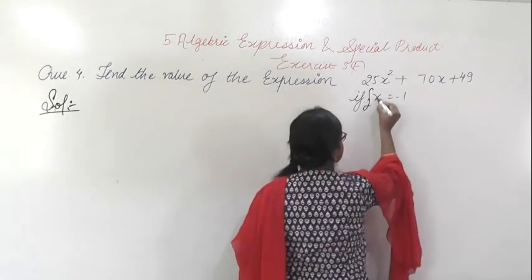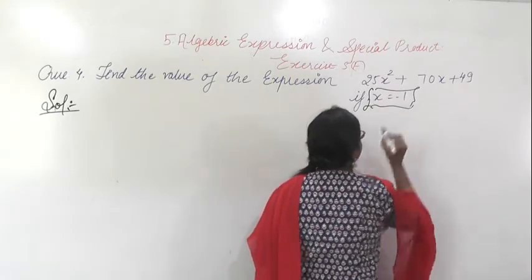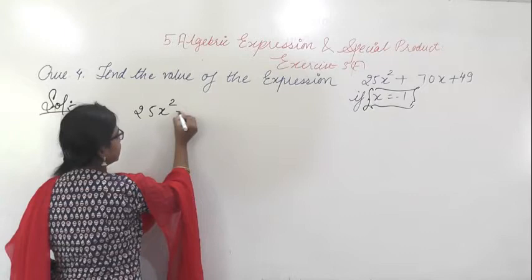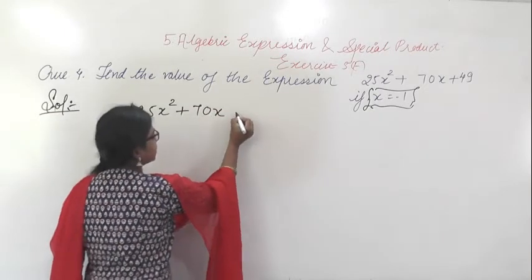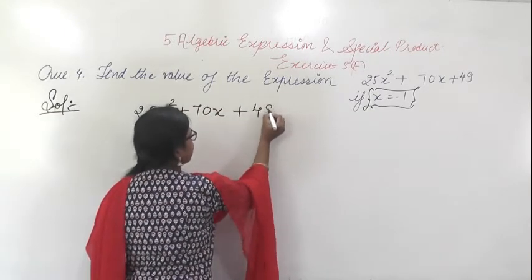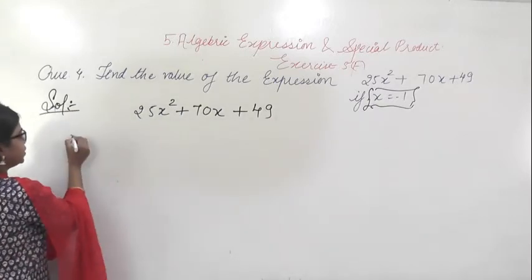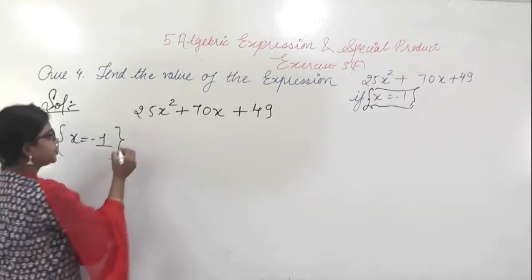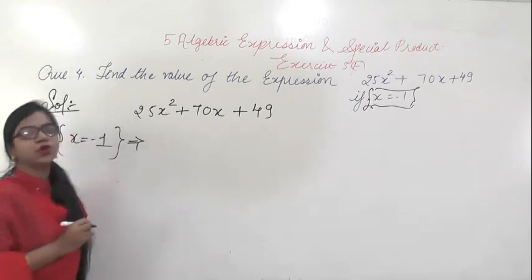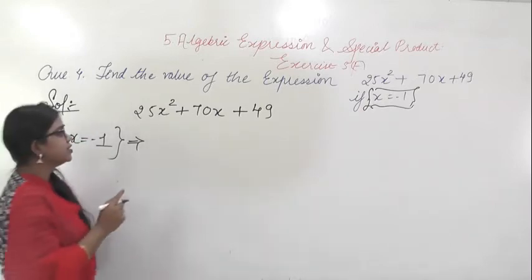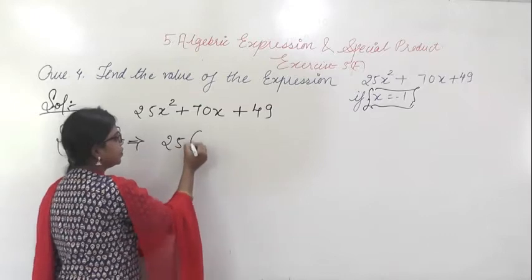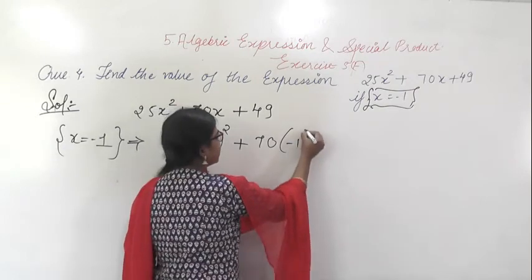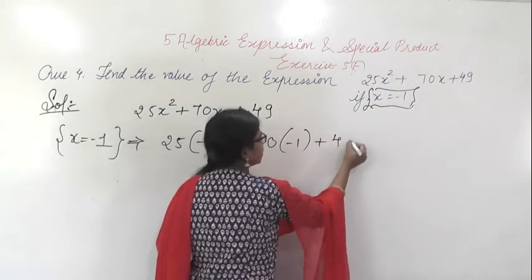The condition given to you is x equal to minus 1. So the expression is 25x² + 70x + 49. In place of x you have to put x equal to minus 1. Substitute the value of x equal to minus 1 in this expression. You will get 25(-1)² + 70 × (-1) + 49.